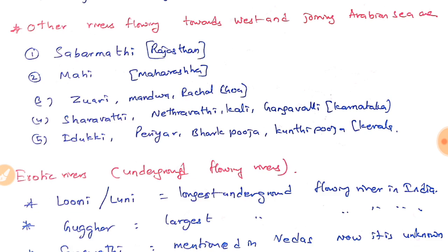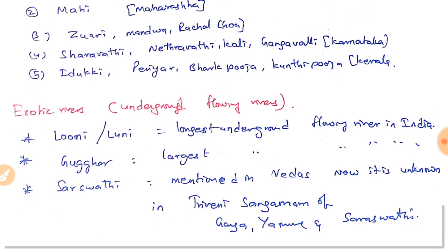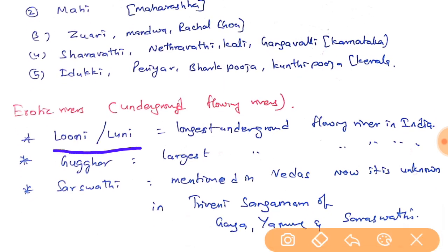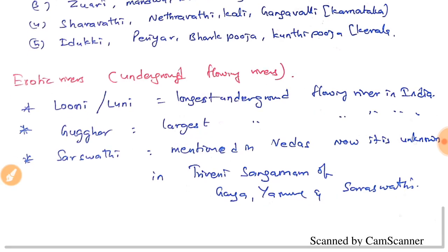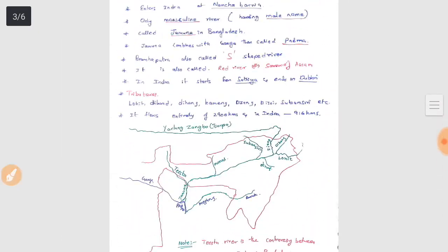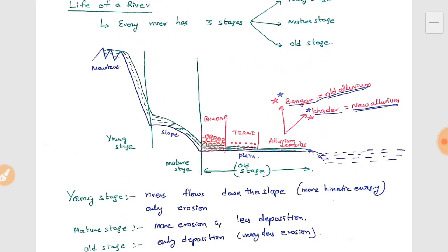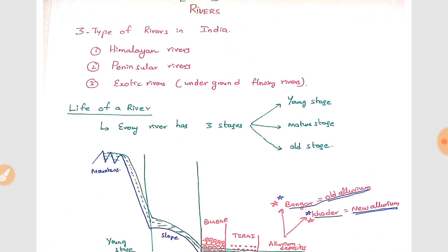Finally, exotic or underground flowing rivers: Luni is the longest underground flowing river in India, flowing through the Rajasthan desert but evaporating and ending before reaching the Arabian Sea. Ghaggar is the largest underground flowing river in India. Saraswati is mentioned in the Vedas as the third river at Triveni Sangam with Ganga and Yamuna at Prayag, but it is not found today. That completes river systems in India. Download the PDF from the link in the description box.